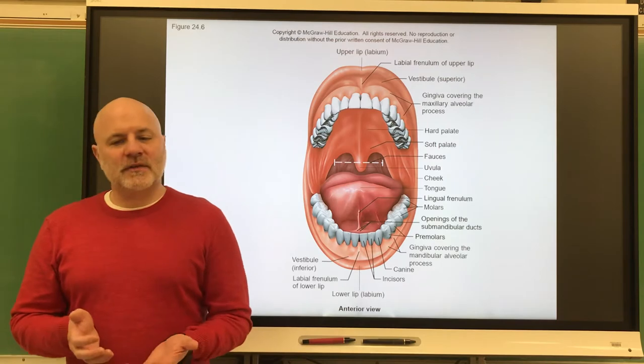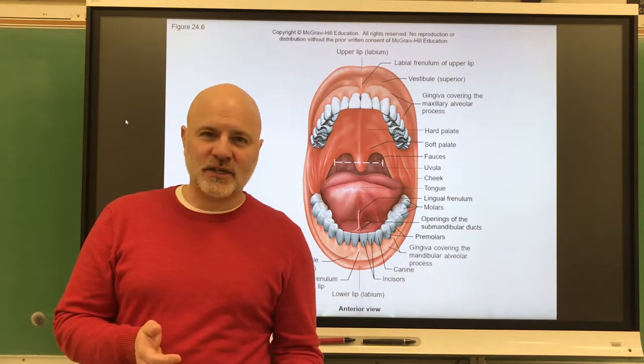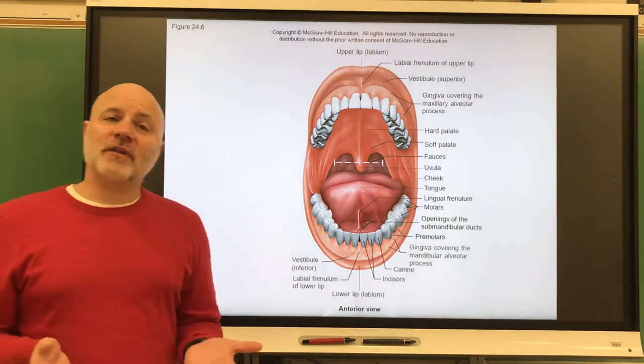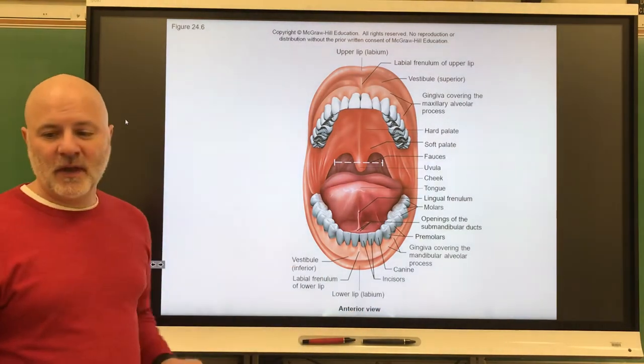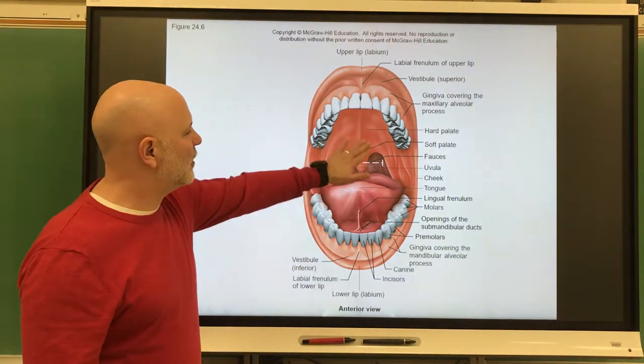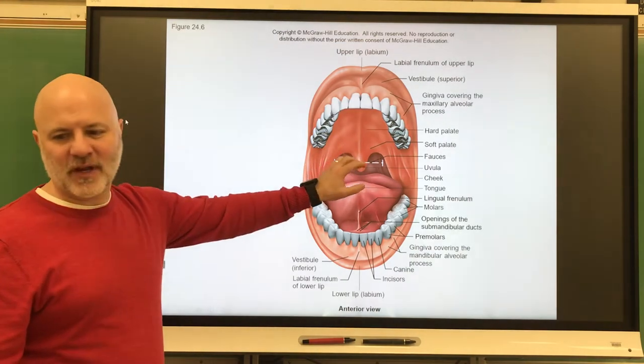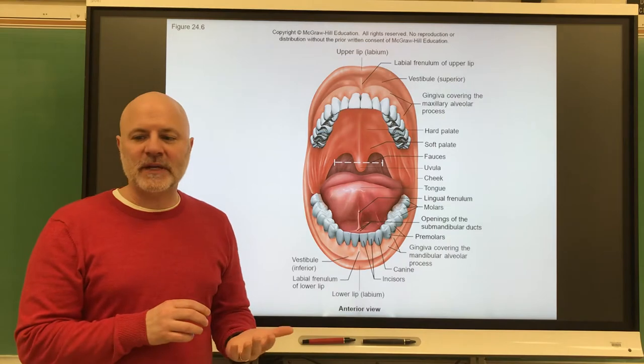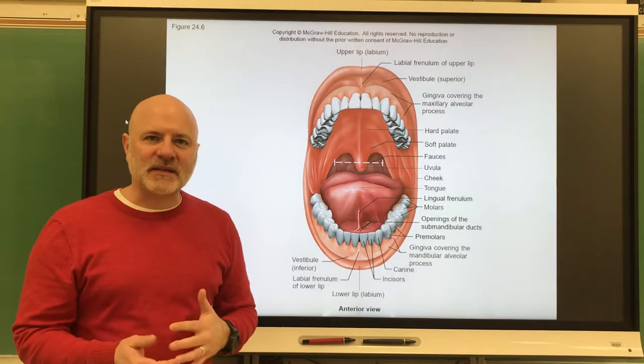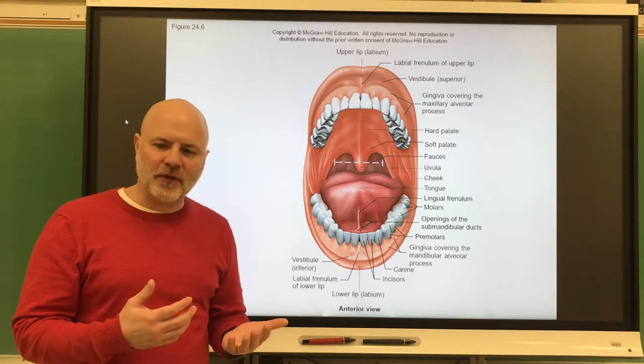So let's start looking at the organs of the digestive system. We're going to start with the mouth and end with the anus. Starting with the mouth, this space right here is known as the oral cavity, also known as the buccal cavity. This is where we start the mechanical breakdown of foods, where mastication occurs, where we chew the food.